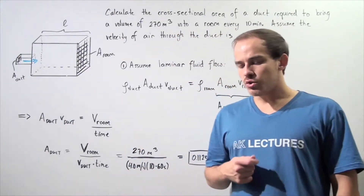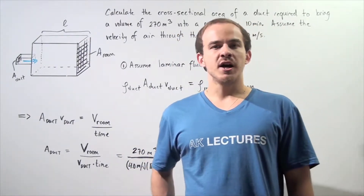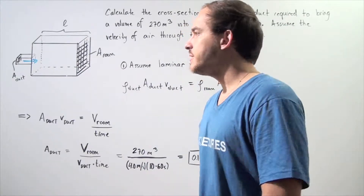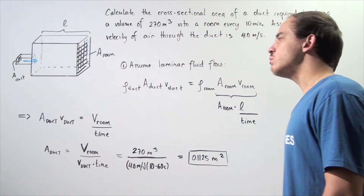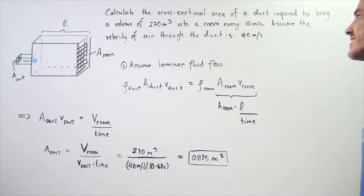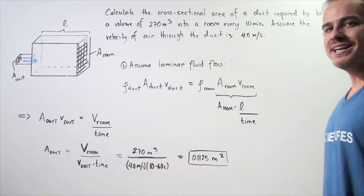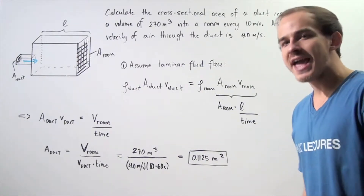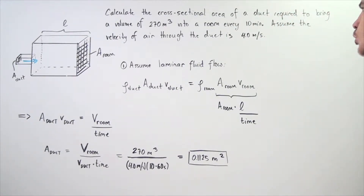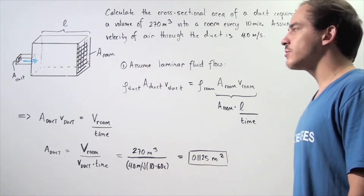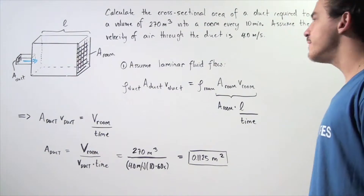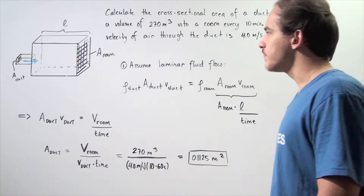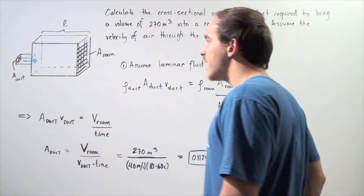In this example, we're going to apply the equation of continuity. Let's suppose we want to calculate the cross-sectional area of a duct required to bring a volume of 270 cubic meters of air into a certain room every 10 minutes. Assume the velocity of air through our duct is given by 4 meters per second. Let's examine our diagram.